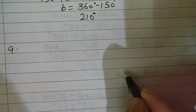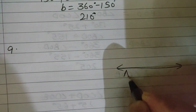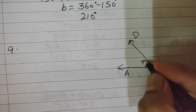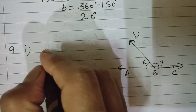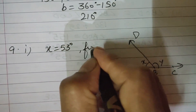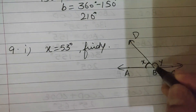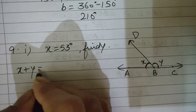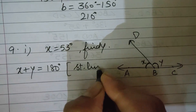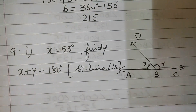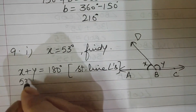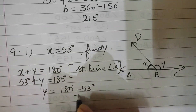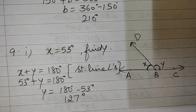Sum number nine: a straight line ABC and ray BD are given, with angle X and angle Y. First part: X is given as 53 degrees — find Y. Angle X and angle Y are adjacent angles on a straight line, so their sum equals 180 degrees. Writing X plus Y equals 180 degrees — straight line angles or linear pair. X is 53, so Y equals 180 minus 53, which is 127 degrees. Second part you can try yourself.